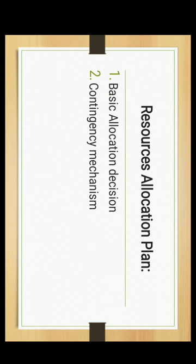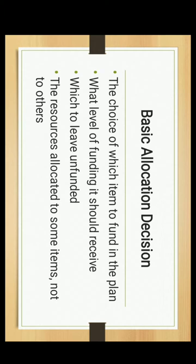The Resource Allocation Plan involves Basic Allocation Decisions and a Contingency Mechanism. A Basic Allocation Decision addresses: the choice of which item to fund in the plan, what level of funding it should receive, which items to leave unfunded, and the resources allocated to some items but not to others.